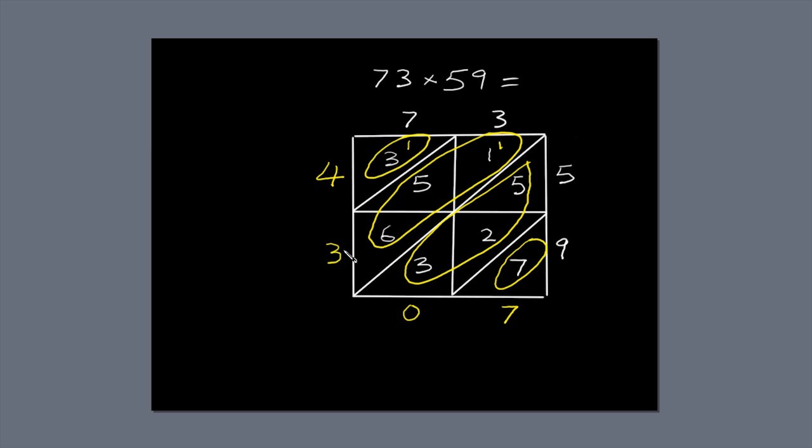Now we just read off the answer. 4, 3, 0, 7. 73 times 59 equals 4,307.